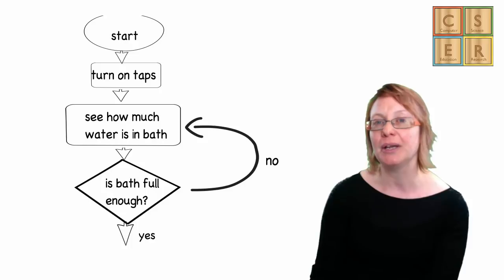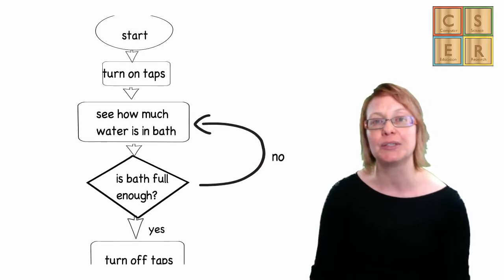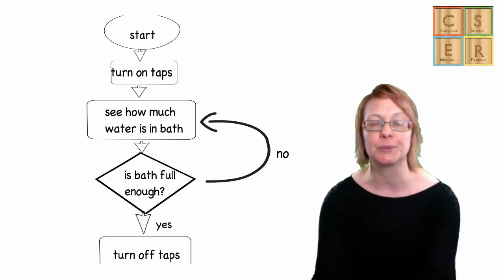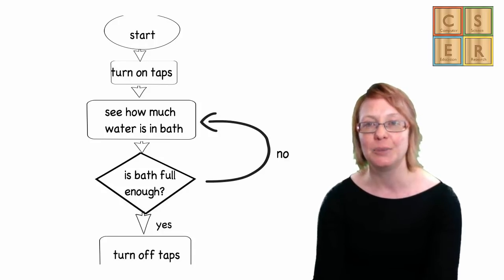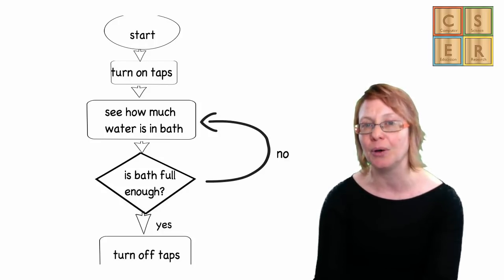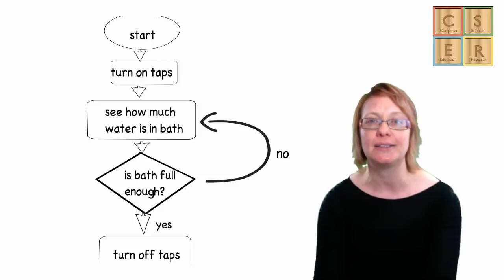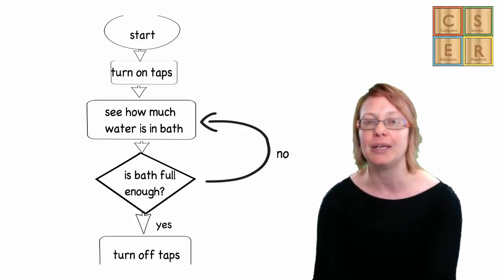Remember, this process of breaking our problem down into smaller instructions is a computational thinking process we refer to as decomposition. Decomposing a problem into smaller subcomponents helps us to figure out exactly what needs to happen and how at each stage.